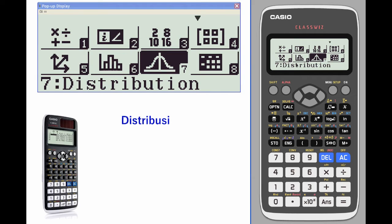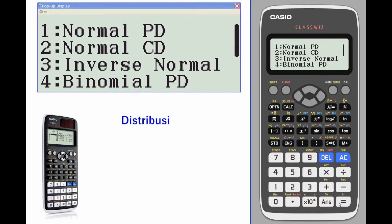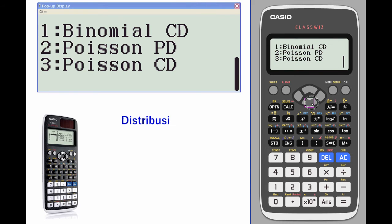Let's have a look at distributions. That's icon number seven. We have normal probability density, normal cumulative density, inverse norm, binomial P, binomial C, Poisson PD, and Poisson CD.